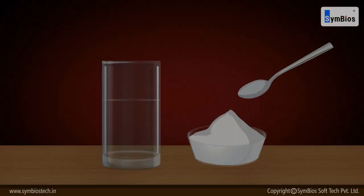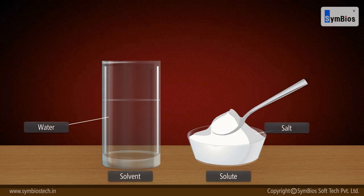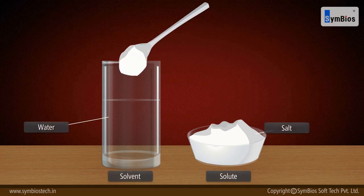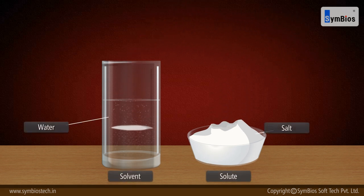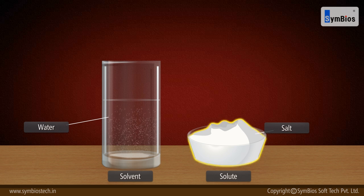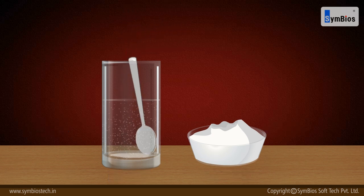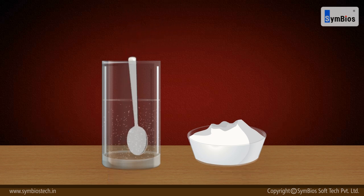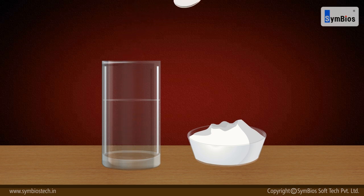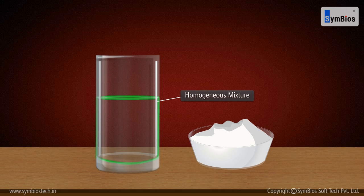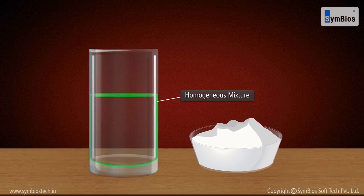Activity: Mix a spoonful of salt in water and dissolve it. Here, salt is the solute and water is the solvent. On dissolving, you will observe that a clear solution is formed and there are no salt particles to be seen. The salt solution thus formed is a homogeneous mixture.